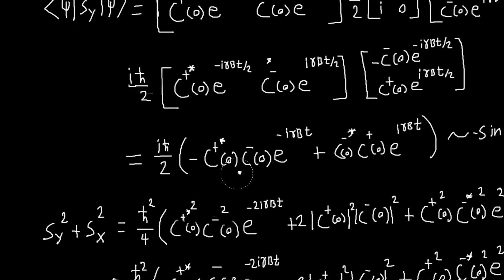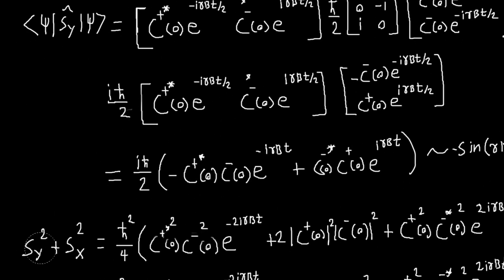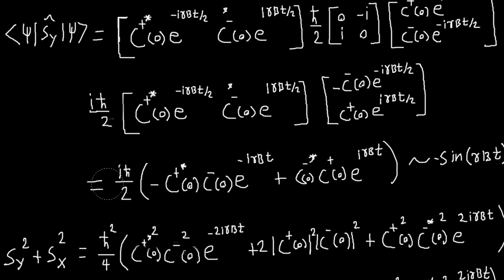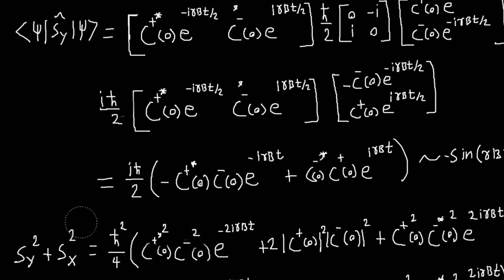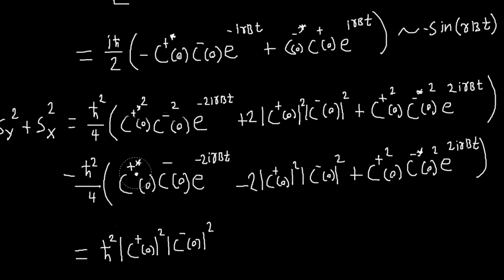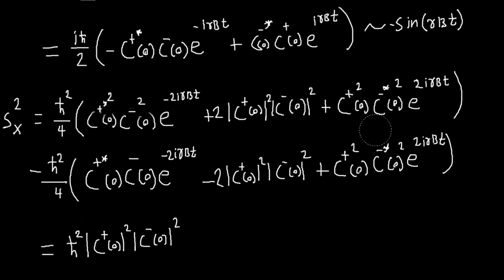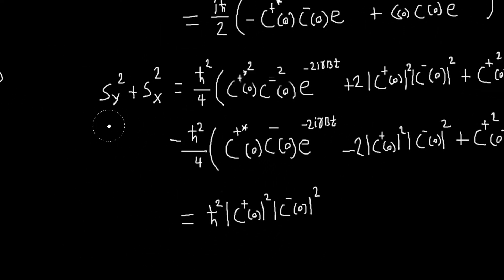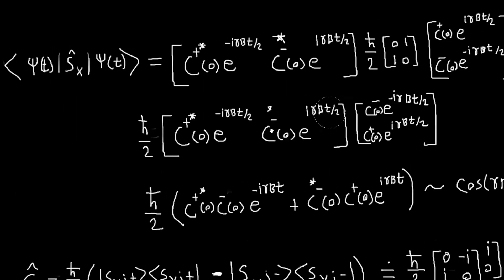And just as a bonus, I computed this should be expectation value of Sy squared plus Sx squared. And we said before that the magnitude of the projection of s on the xy plane is constant. So if I compute this, I get that the time dependence cancels out. So this is constant. So everything matches up with the classical problem.